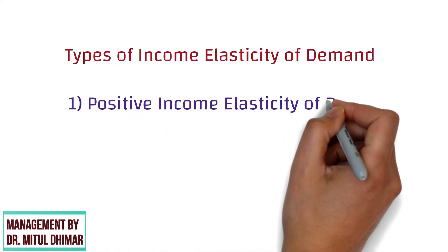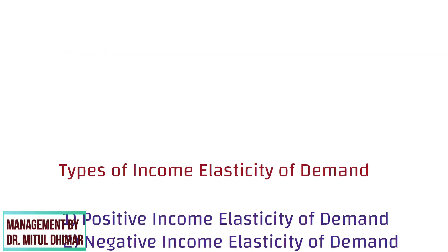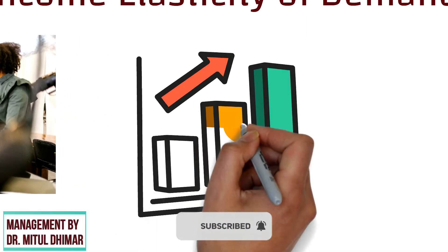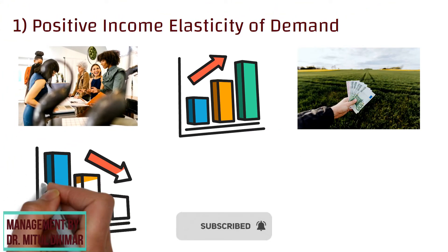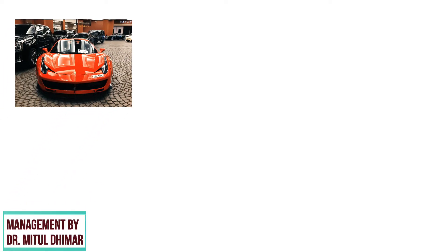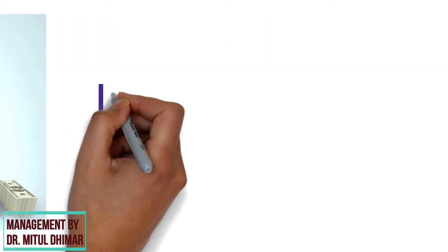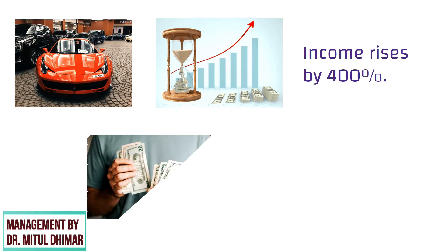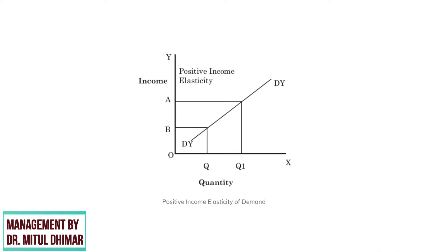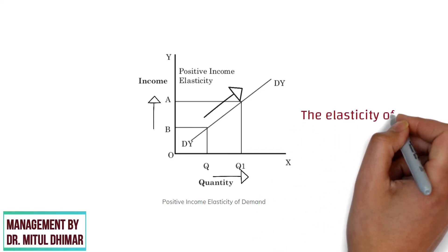There are three types of income elasticity of demand. On the basis of numerical value, income elasticity of demand is classified into three groups. The first is positive income elasticity of demand. It refers to a situation when the demand for a product increases with increase in consumers' income and decreases with decrease in consumers' income. The income elasticity of demand is positive for normal goods. An example of a product with positive income elasticity could be Ferraris. If the economy is booming and everyone's income rises by 400%, the quantity of Ferraris demanded will increase. In the above figure, the slope of the curve is upward from left to right, which indicates that the increase in income causes increase in demand and vice versa. Therefore, in such a case, the elasticity of demand is positive.